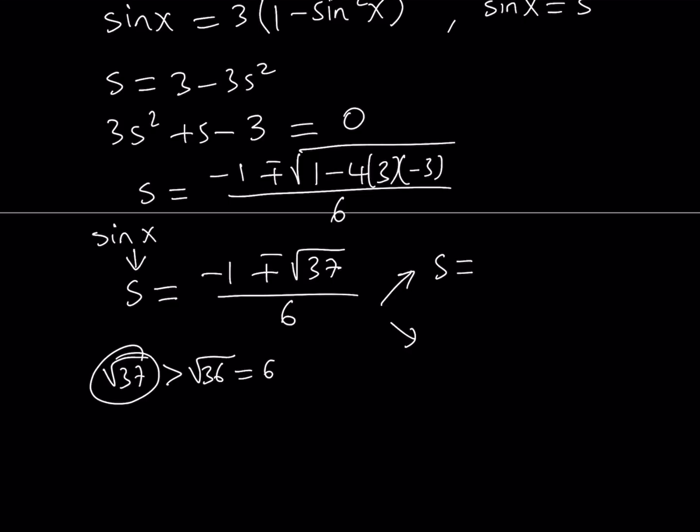So if you write these separately, one of them is going to give you negative 1 minus square root of 37 over 6. And the other solution is going to give you negative 1 plus the square root of 37 over 6. Now, here's one thing to keep in mind, that this quantity is greater than 6. So its opposite is going to be less than negative 6. So negative 6, something less than negative 6 divided by 6 is going to be less than negative 1. So this quantity is obviously less than negative 1. And subtracting another 1 makes it even less, even smaller. But that doesn't matter. We know that this quantity is less than negative 1. So it doesn't count because sine of x cannot be less than negative 1.